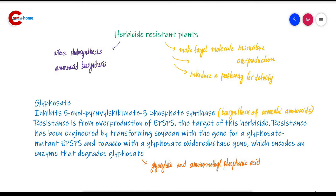Herbicides generally affect processes that are unique to plants, for example photosynthesis or amino acid biosynthesis. Hence, developing herbicides that are selective only for weeds is very difficult, because weeds and crops both share these common processes.